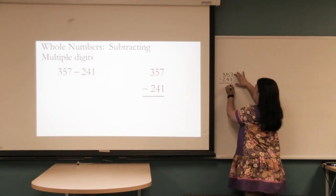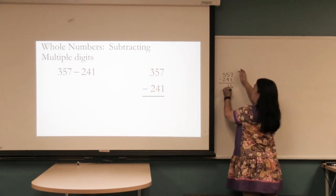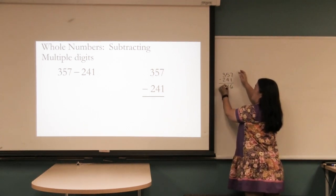Seven minus one, seven take away one gives you six. Five take away four gives you one, and three take away two gives you one.